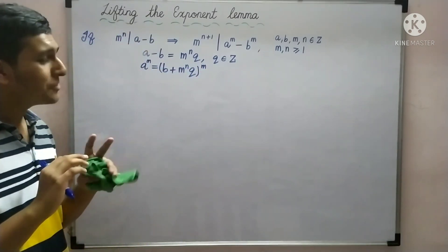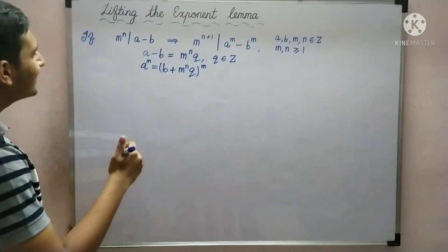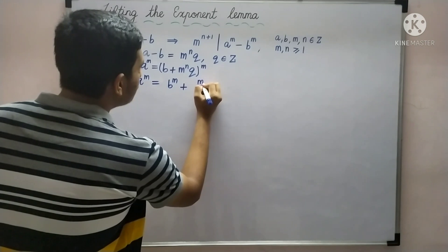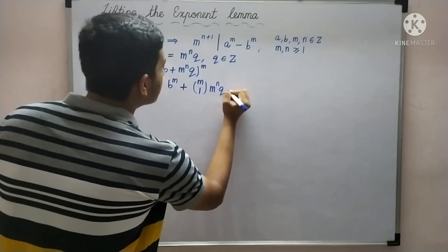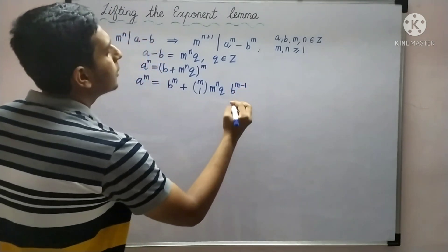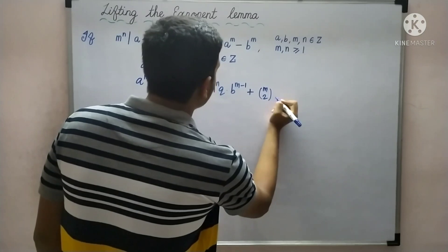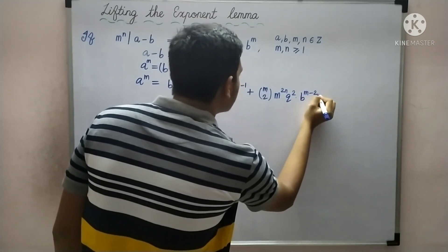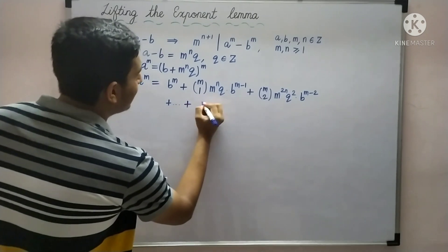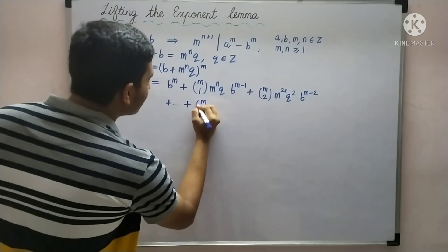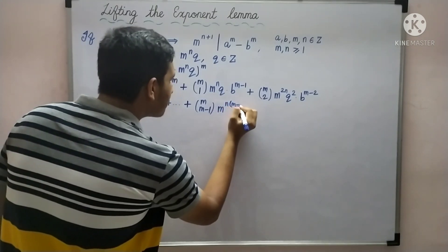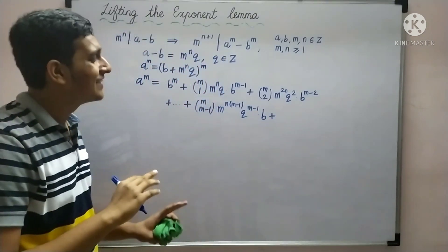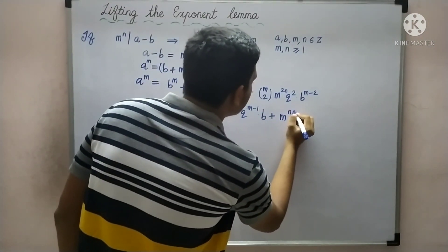To expand the RHS, we need a favor from the binomial theorem. We get: a raised to m is equal to b raised to m, plus m choose 1 times m raised to n times q times b raised to m minus 1, plus m choose 2 times m raised to 2n times q squared times b raised to m minus 2, and so on, up to m choose m-1 times m raised to n(m-1) times q raised to m-1 times b, and finally m raised to nm times q raised to m.